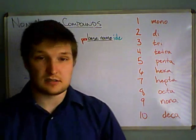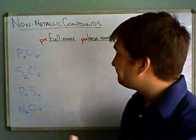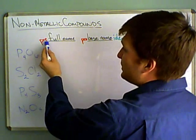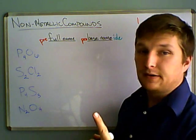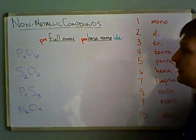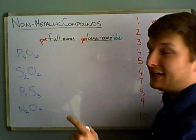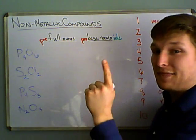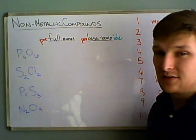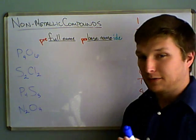So the only time that you don't put a prefix in front of this one is if it's one. Then you don't put mono. However, if the second one, if the second atom has one atom, then you do put the prefix. So just remember that, okay?